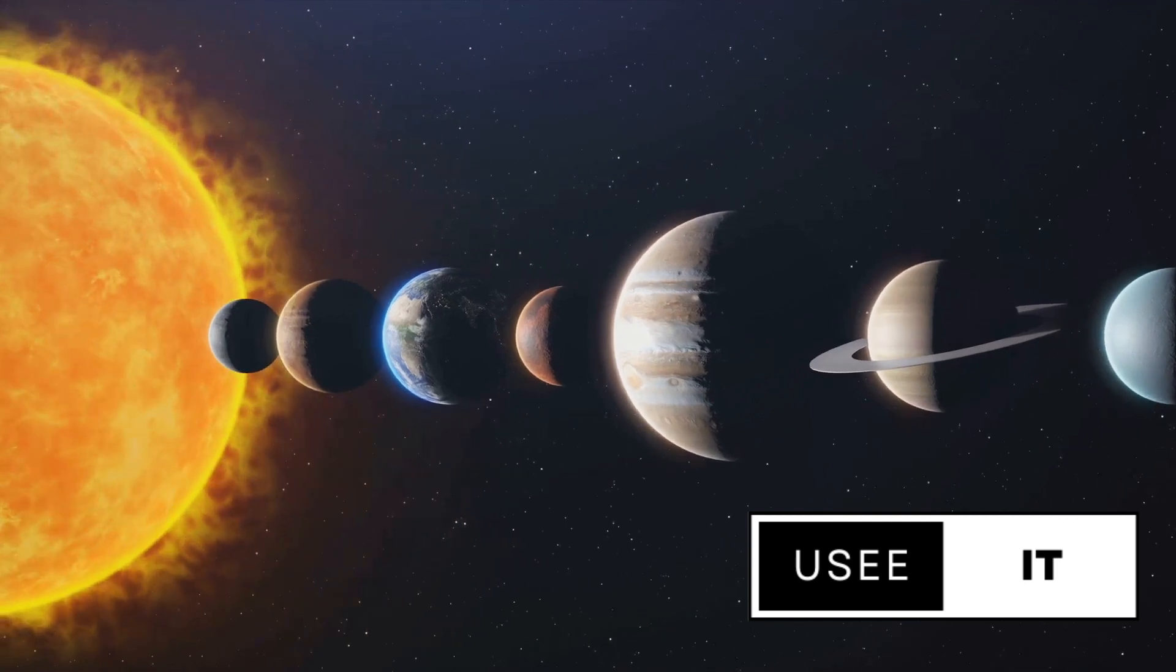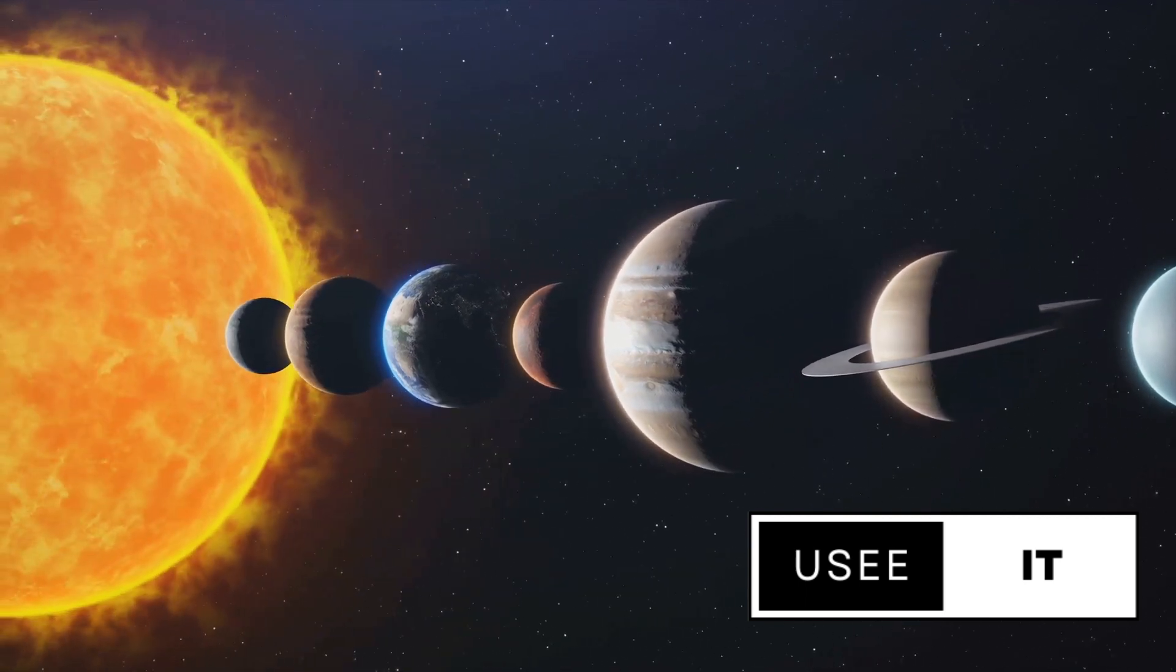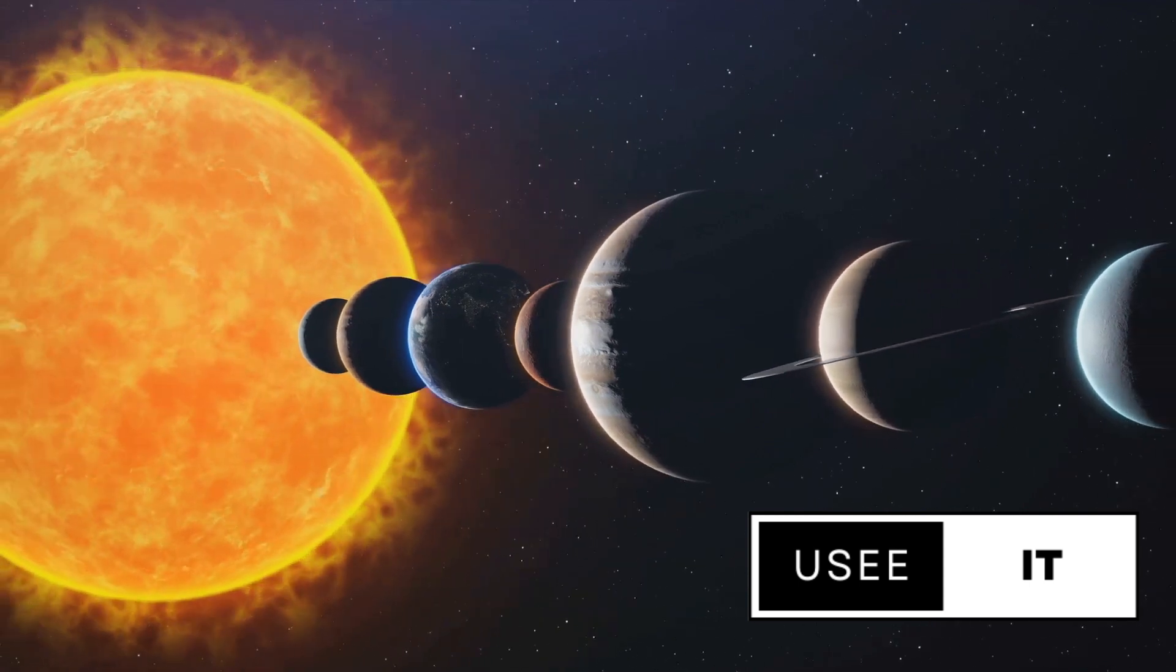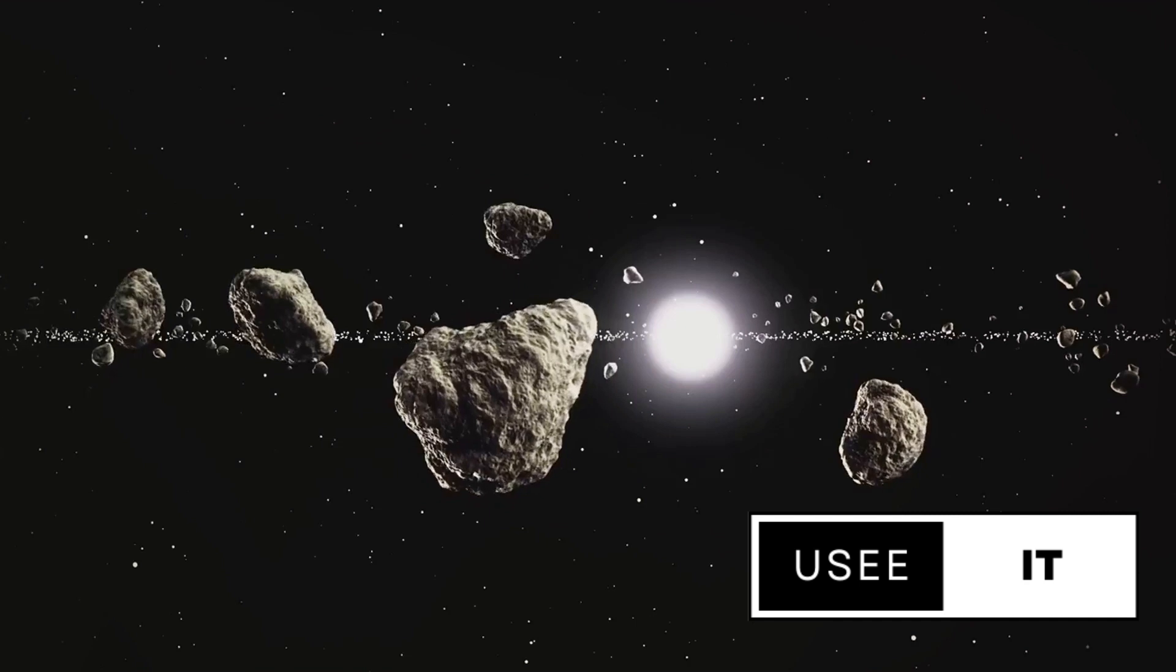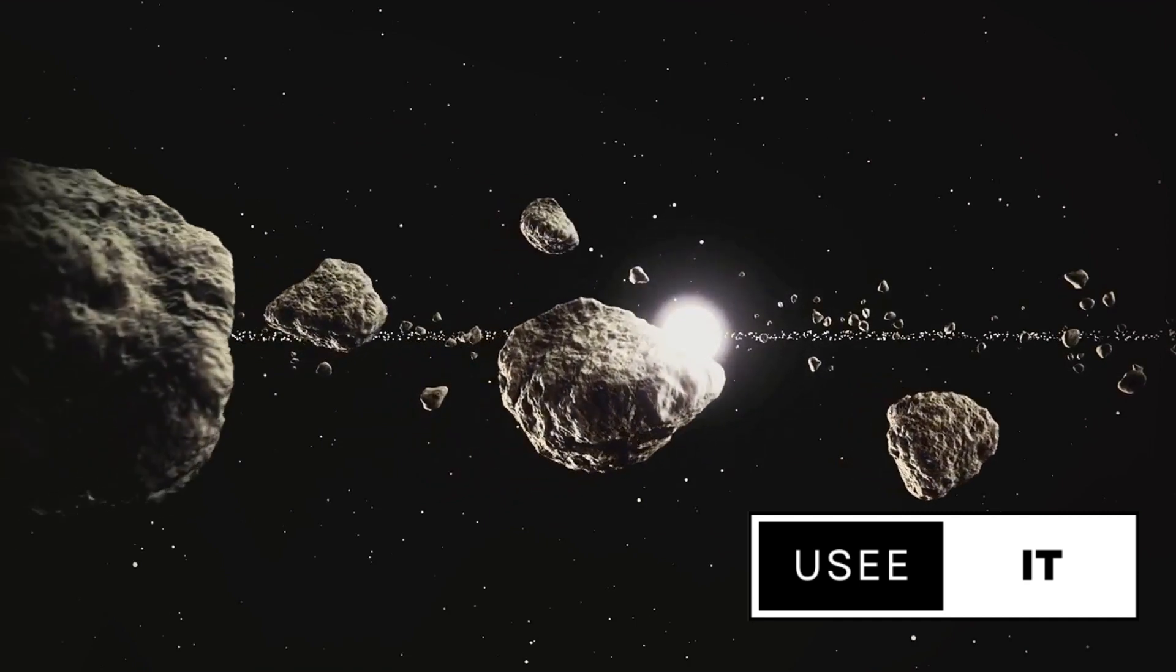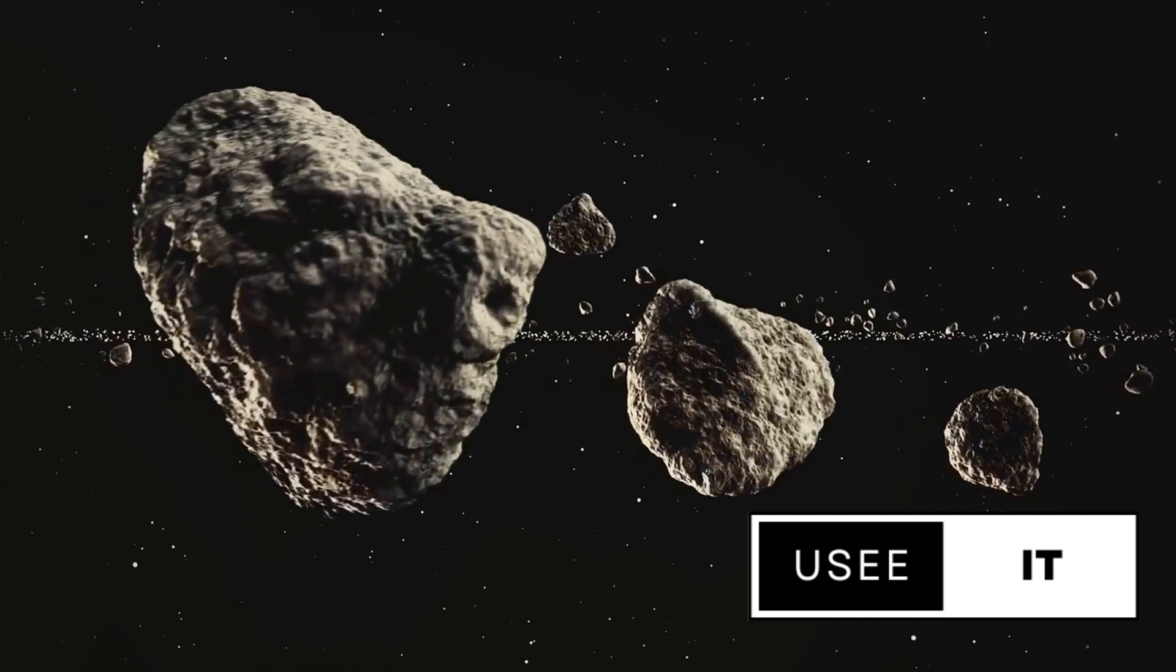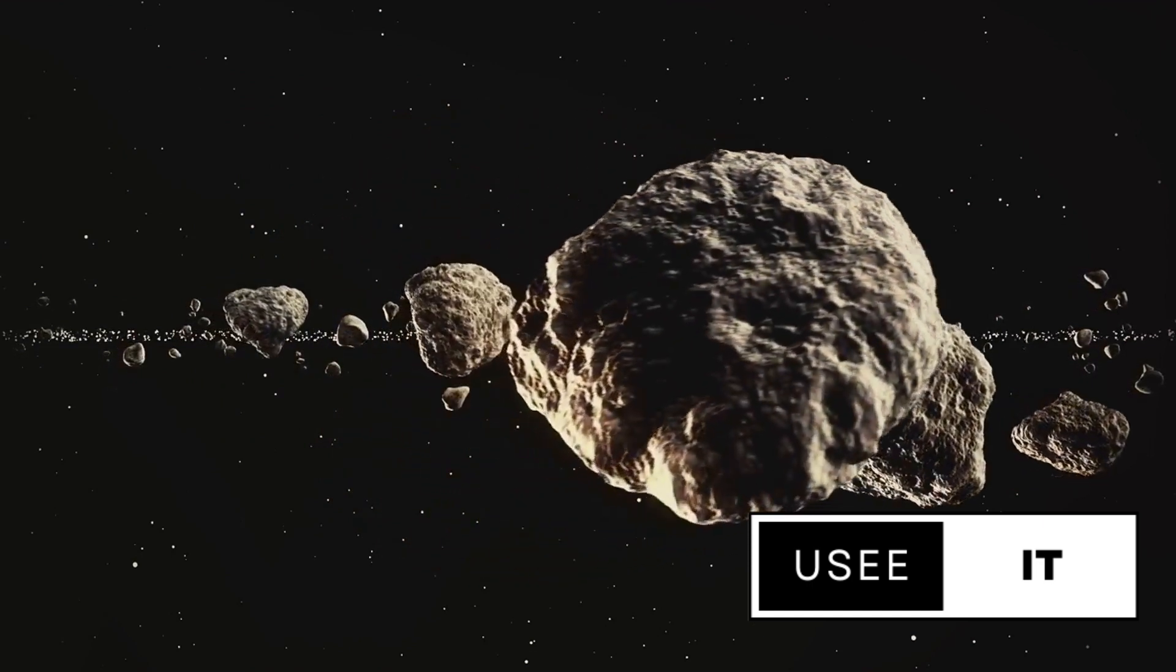We steer through our own backyard, the solar system, dodging planets, asteroids and comets, like an interstellar obstacle course. It's a dance, a ballet of celestial bodies, all while traveling at a speed that would make light itself blush. But this is just the starting line.